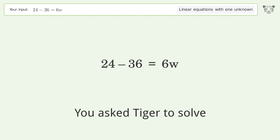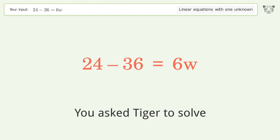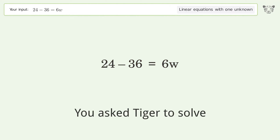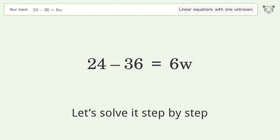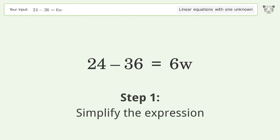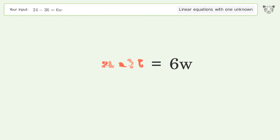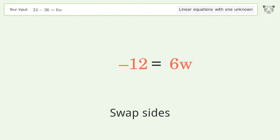You asked Tiger to solve this — it deals with linear equations with one unknown. The final result is w equals negative 2. Let's solve it step by step. First, simplify the expression, then swap sides.